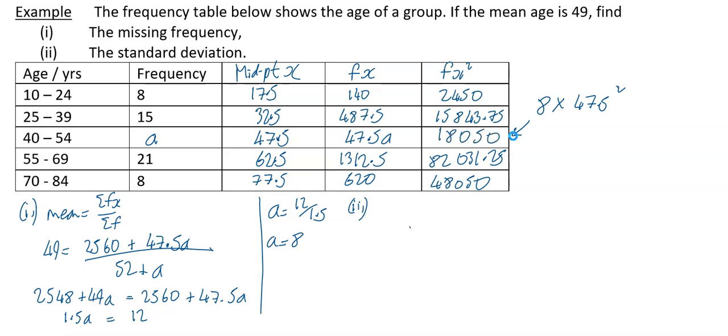Okay, what we need to have for the formula is we need our sigma F, and remember we know what A is now, it's 8. We need to have our sigma FX and we need to have our sigma FX squared. So we need all those things for our formula. When you add up all your frequency, so that's 8 plus 15 plus another 8, which is the new A, and then 21 plus 8, you will get 60. Okay, when you add up all of your FX's, so it's your FX column.